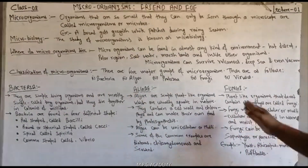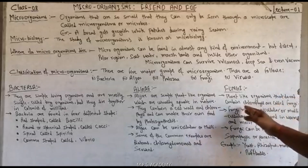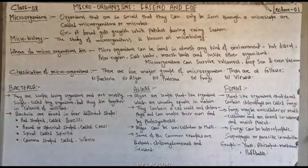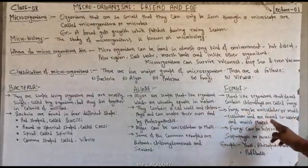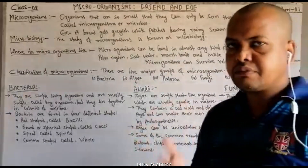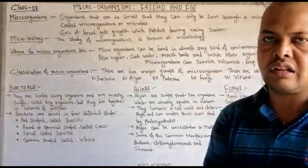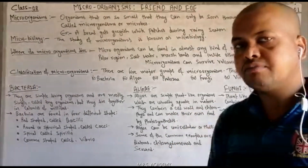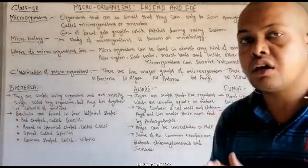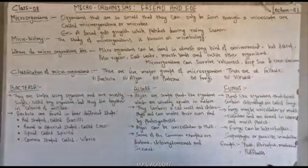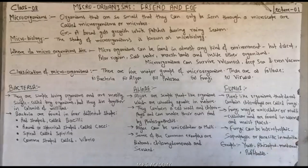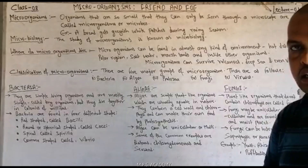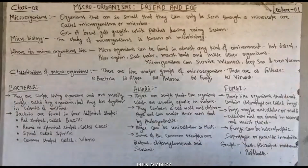Now let's talk about fungi. Plant-like organisms that do not contain chlorophyll are called fungi. Hum, plant ke jaisa jo organism jiske andar chlorophyll nahi paaya jaata, use hum log fungi kehte hain. Fungi may be unicellular or multicellular and are found in warm and moist places. Fungi heterotrophic, saprophytic, or parasitic in nutrition ho sakta hai.